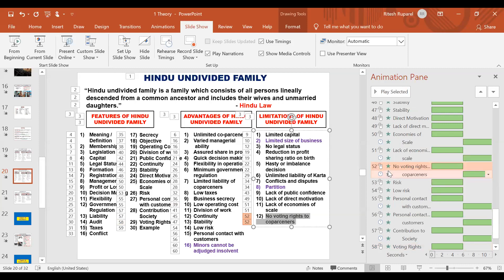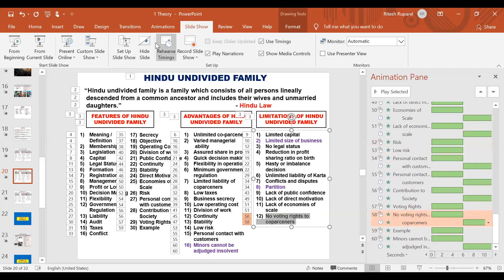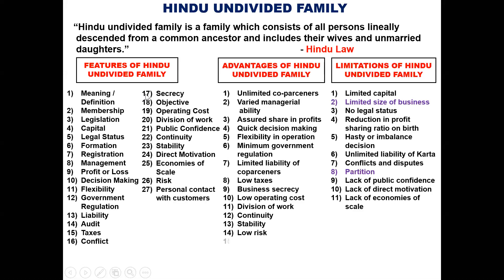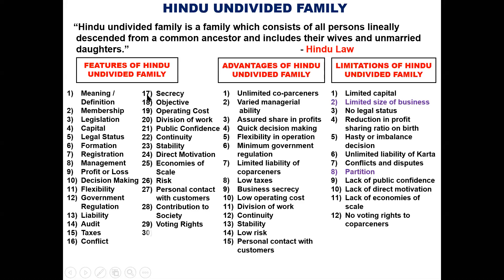The voting rights point is valid with examples. Minors cannot be adjudged insolvent — this is also a point. When liabilities exceed assets, the HUF may become insolvent, but minor children under 18 cannot be declared insolvent. That is an advantage. These are the advantages and limitations of HUF — if you have questions, ask now.